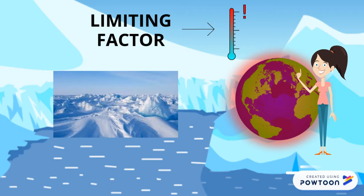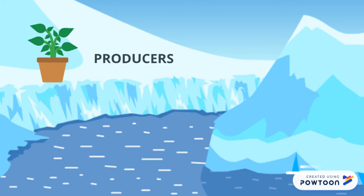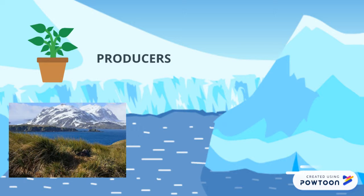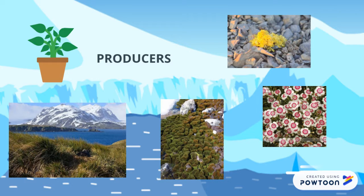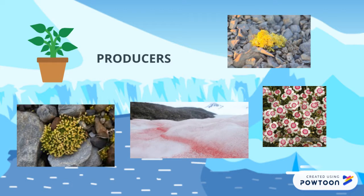Because of global warming, the temperature is increasing. This is a very serious problem that affects this type of ecosystem. These are some living things of this ecosystem. Plants are the producers. Some examples are Antarctic grass, moss, lichen, Arctic carnation, Antarctic birdwort, snow algae, and liverworts.